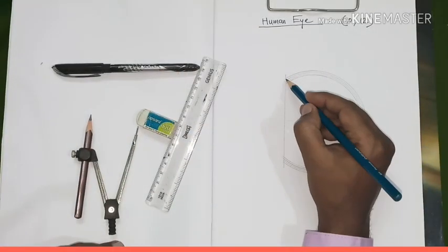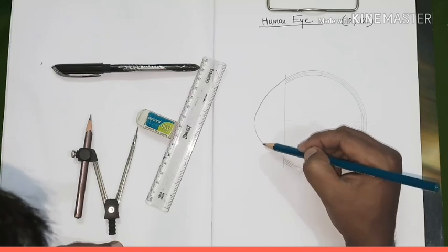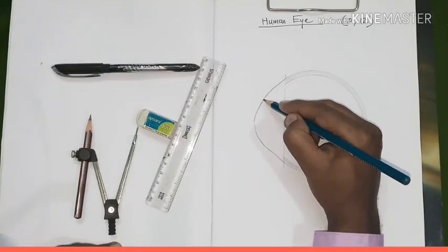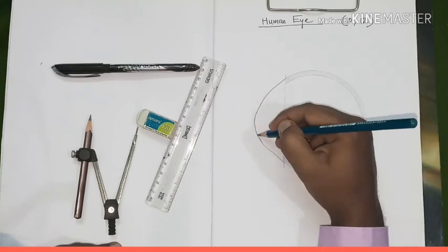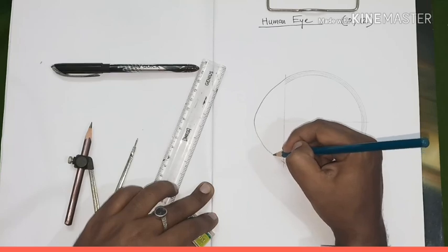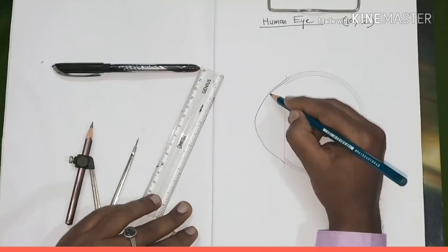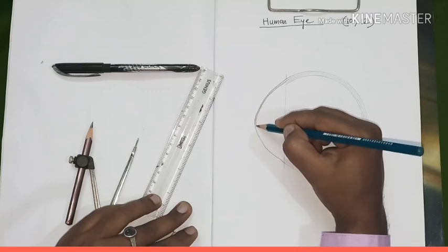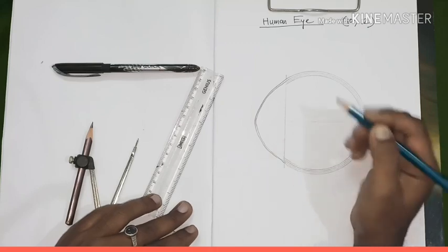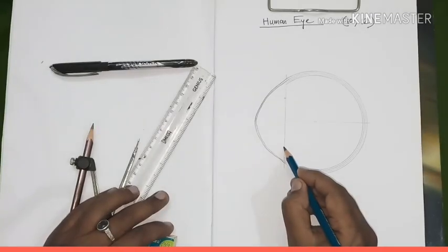Now, with the help of a pencil, we have to bulge out the front portion of our eyes. Now, extend the second circle and draw along the outer mouth line.